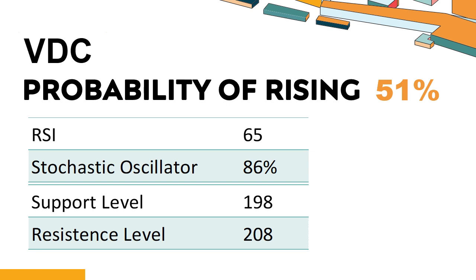An overbought condition occurs when a stock's price rises too fast and too high in a short period of time, and can be a sign that buying pressure has exhausted. The probability of VDC share price rising is 51%. Combining multiple technical analysis indicators, VDC has five bullish signals and four bearish signals.